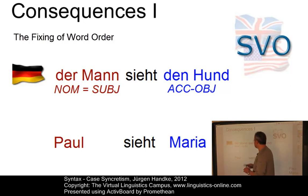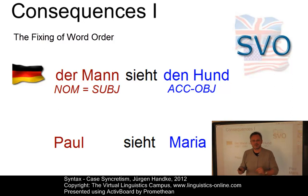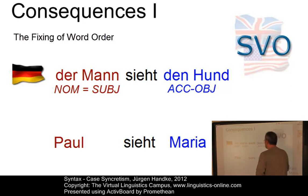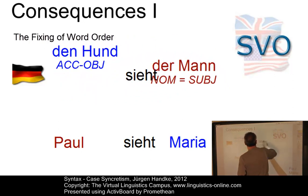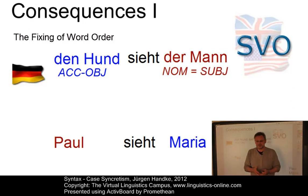Here is a short sentence: 'Der Mann sieht den Hund' — 'The man sees the dog.' Even though the nouns occur in their base forms — 'Mann' and 'Hund' — the articles correspond with particular cases. 'Der' is the article for the nominative case, and 'den' clearly marks the accusative case. This allows us to change the word order without problems: we can say 'den Hund sieht der Mann.' The meaning is slightly different in emphasis, but the sentence is fully grammatical — we have simply swapped the object with the subject.